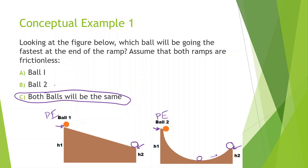It doesn't actually matter what the path is. If it's frictionless and ends at the same height, it'll have the same velocity at the end. One path might take longer, but it'll have the same velocity at the end.